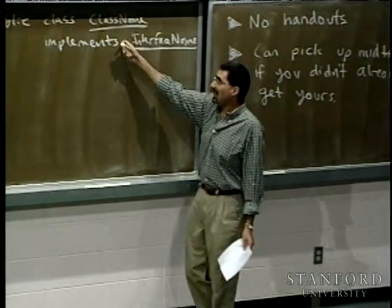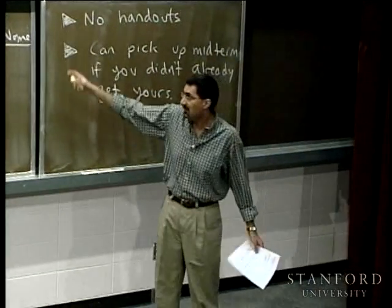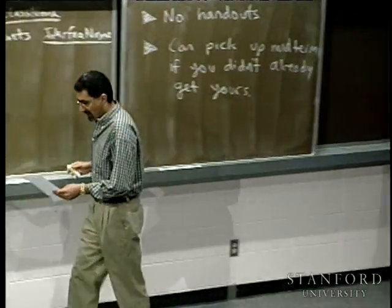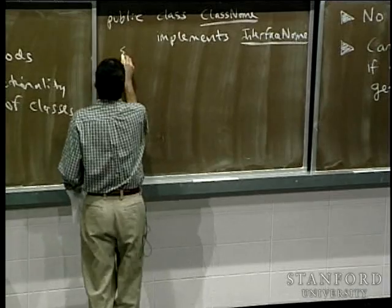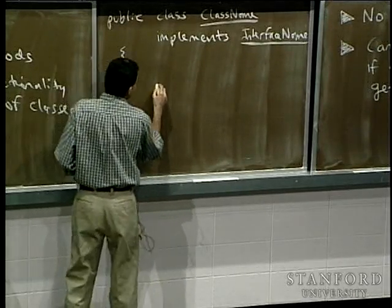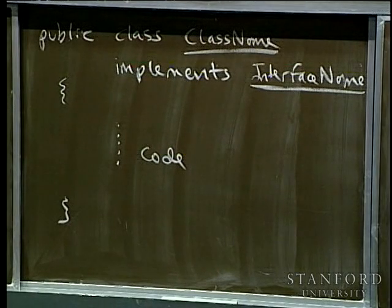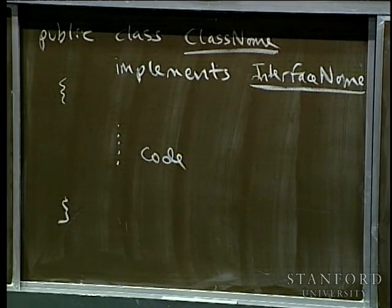It's perfectly fine for a class to not only implement an interface but also to extend some other class — the syntax just gets longer. Inside the class, just like you'd be used to, this would be all of your code for the implementation of the methods. You're specifically telling the machine: this class is going to support all the stuff from some particular interface like GFillable.